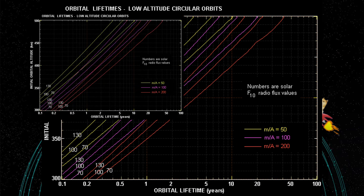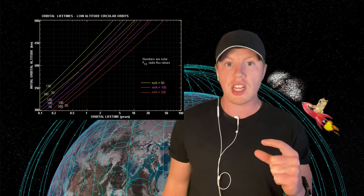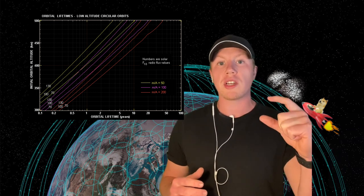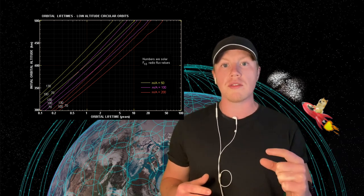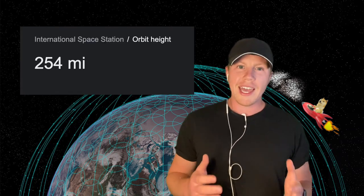So for example, a piece of debris would spend 1000 years falling from 700 kilometers to 600 kilometers, but it would only spend 100 years going from 600 kilometers to 500 kilometers in altitude, and so on.